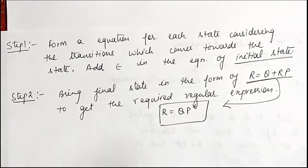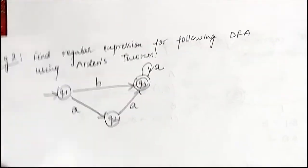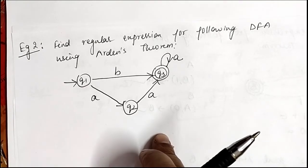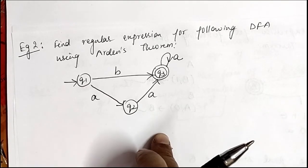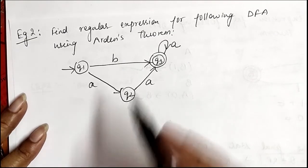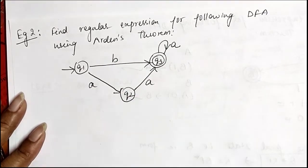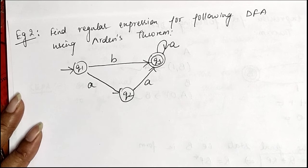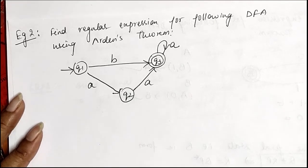Now we solve one more problem: find the regular expression for the following DFA using Arden's theorem. First, check whether we can apply Arden's theorem. This DFA does not contain any epsilon transition, and it contains only one initial state. Both conditions are satisfied, so we apply Arden's theorem.